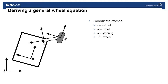The first thing we'll do is define a number of coordinate frames. The first is the inertial frame — a non-moving frame that we track the robot's motion with respect to. Next, we have the robot coordinate frame, which is rigidly attached to the robot. We have the steering coordinate frame, where the steering of the wheel is around the z-axis. And finally, we have a frame rigidly attached to the wheel.